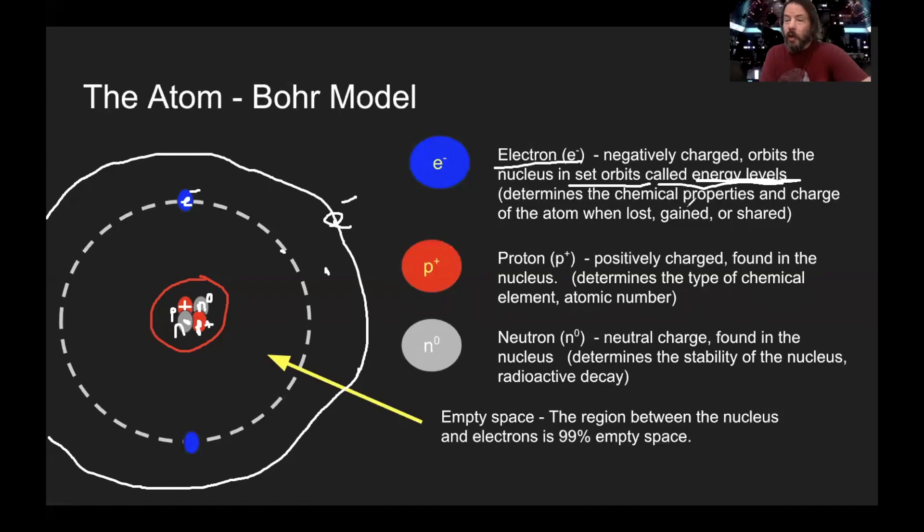Electrons determine the chemical properties and charge of the atom. When they're lost, gained, or shared, they cause the atom to be able to combine with other atoms. And once they're lost or gained, they either cancel out the positive charge in the middle, or they are less than or more than, which means it makes the atom positive or negative.